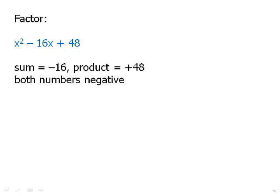But if you have negative plus negative, that will give you a negative. So, both numbers must be negative. So, we need two numbers that multiply to 48.